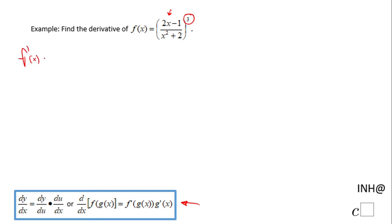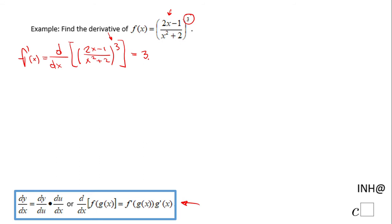f prime of x — the derivative of f of x — is the derivative with respect to x of the expression (2x minus 1) over (x squared plus 2) raised to the third power. First, you'll notice we have an expression raised to a power, so I'm going to use the power rule: move the power of 3 up front, keep the expression (2x minus 1) over (x squared plus 2), and drop the exponent by 1 — so 3 minus 1 gives us 2.